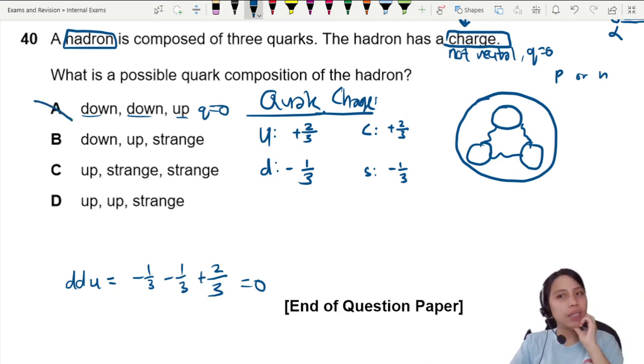Down, up, strange. Down, up, strange is negative one over three, two over three, and strange negative one over three, also zero. I cannot. Let's look at up, strange, strange.